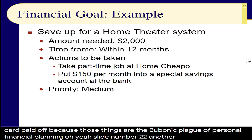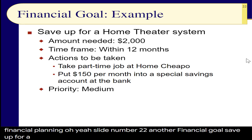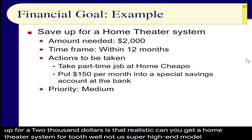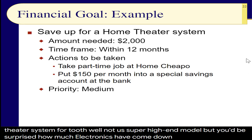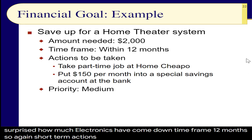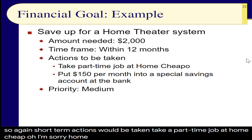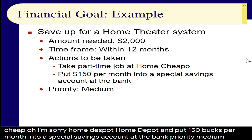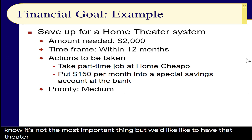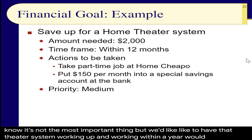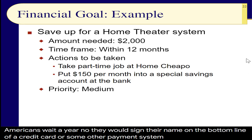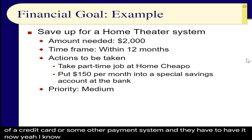Slide 22: another financial goal — save up for a home theater system. The amount needed is $2,000. Can you get a home theater system for $2,000? Not a super high-end model, but electronics have come down considerably. Time frame: 12 months — short-term. Actions to be taken: take a part-time job at Home Depot and put $150 per month into a special savings account. Priority: medium. Would most Americans wait a year? No — they would sign their name on a credit card and have to have it now. That's the American way, and I don't like it.